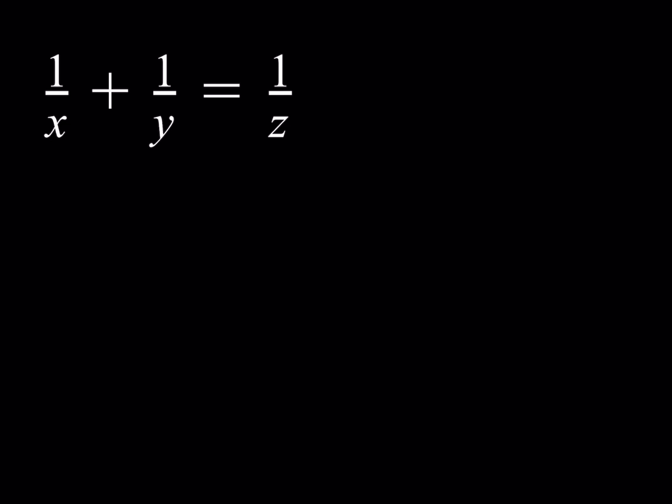So if we have this Diophantine equation, 1 over x plus 1 over y equals 1 over z, we're looking for positive integer solutions.